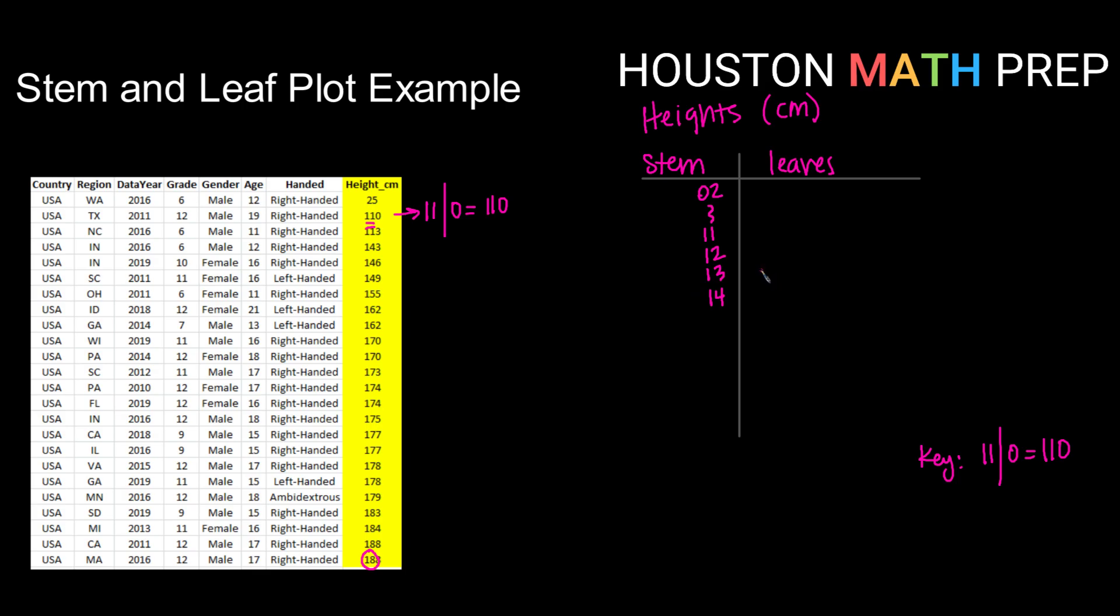It will show me that there are empty bars essentially. So I'm going to go from 11 counting by one all the way up to a stem of 18 since my largest data value is 188.